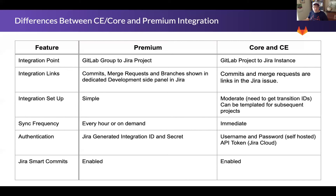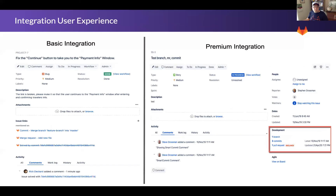Now let's take a look at the differences in the user experience between the two integrations. On the left side, we have a screenshot of the basic Jira integration. As you can see, the links are inline in the issue and make it longer, so more scrolling is required.